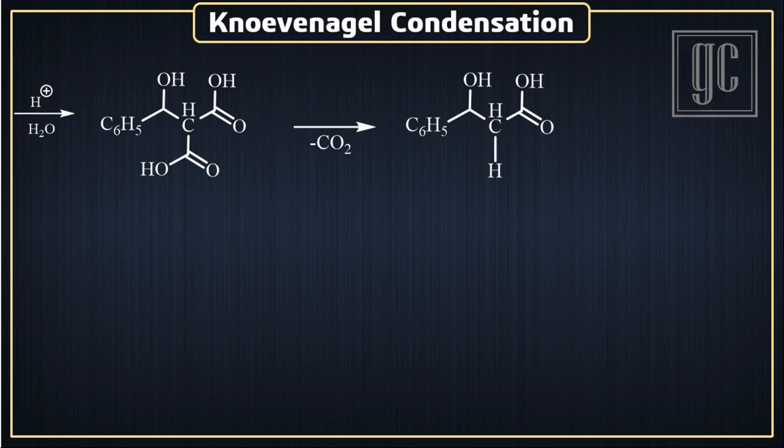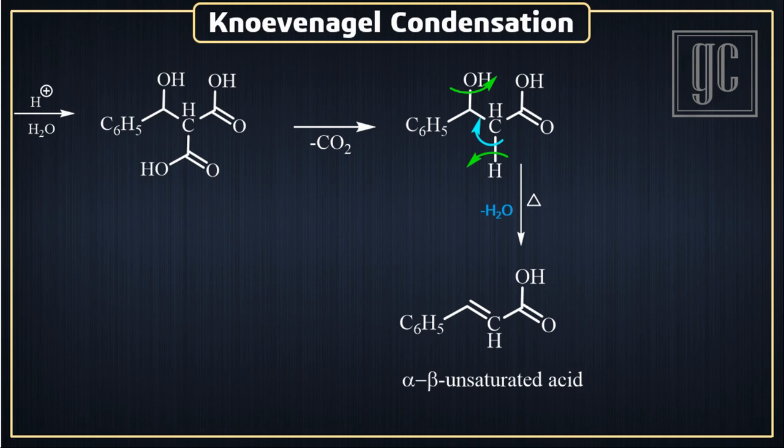Beta-hydroxy acids undergo a beta-elimination reaction in order to make a more stable final product. Under thermal conditions, beta-hydroxy acids remove one water molecule and form a carbon-carbon double bond, and the final product, alpha-beta unsaturated acids, are formed.